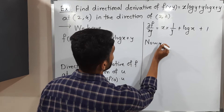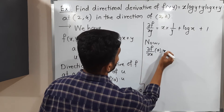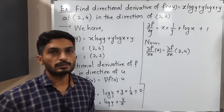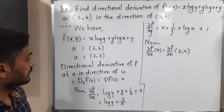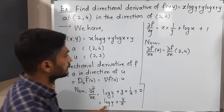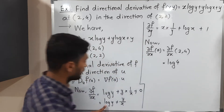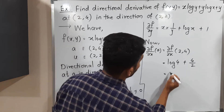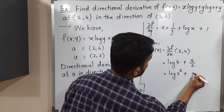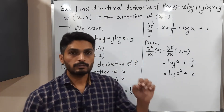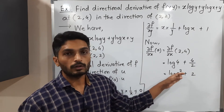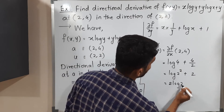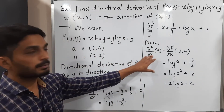Now we will find the values of partial derivatives at point a = (2,4), so x=2 and y=4. For ∂f/∂x at a: we get log(4) + 4/2 = log(2²) + 2. By the log property, the power comes in front, giving 2·log(2) + 2. So ∂f/∂x at a = 2·log(2) + 2.